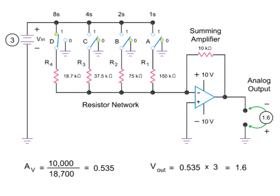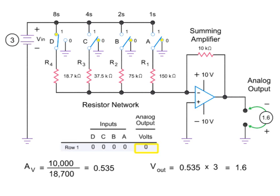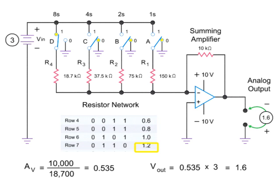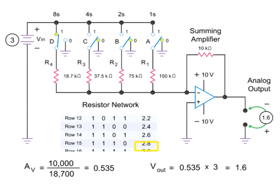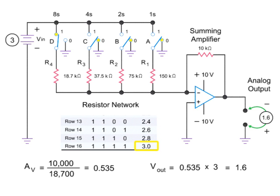As previously mentioned, observe how the voltage increments by 0.2 as we open and close the various switches based on binary inputs. Finally, we can generate an output of 3 volts by inputting binary code 1111.